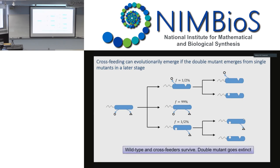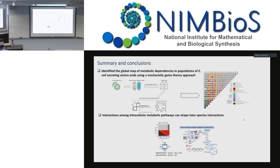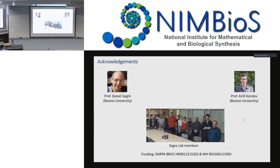To quickly recap: I showed how we incorporated organism-specific genomic and biochemical data into evolutionary game theory, and then used this mechanistic game theory approach to construct a global map of ecological interactions in E. coli populations leaking different amino acids. The take-home message is that accounting for these mechanistic details captured by metabolic networks is really important, because intracellular metabolic circuits can truly shape the type of interspecies interactions that emerge at the community level. With that, I'd like to thank my advisor Daniel Sekai and others, and I'd be happy to take questions.